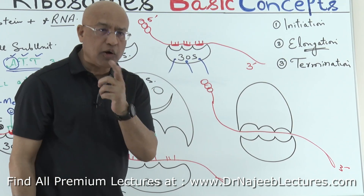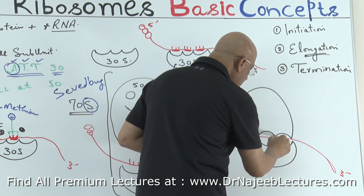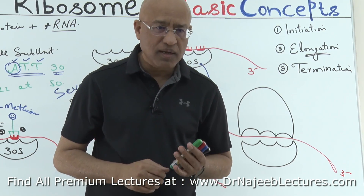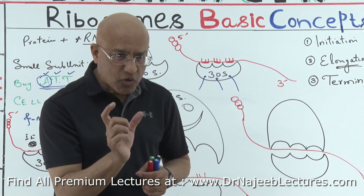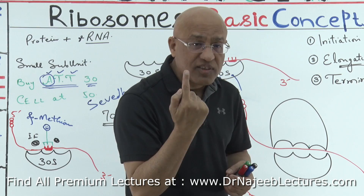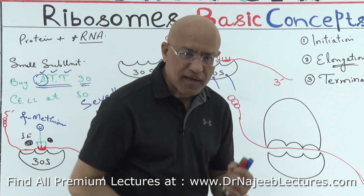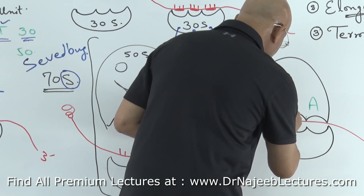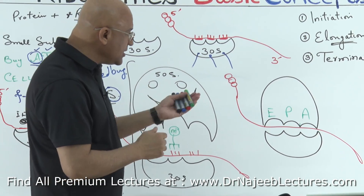The ribosome makes peptide chains very fast. Once the initiation complex is formed and the 50S has joined, the process goes rapidly — many amino acids are added in one single second. Think of it as A-P-E business: there are three functional sites — the A site, the P site, and the E site. These functional sites are mostly contributed by the 50S subunit, with a small part from the 30S subunit.